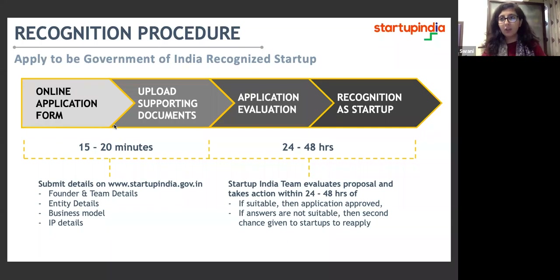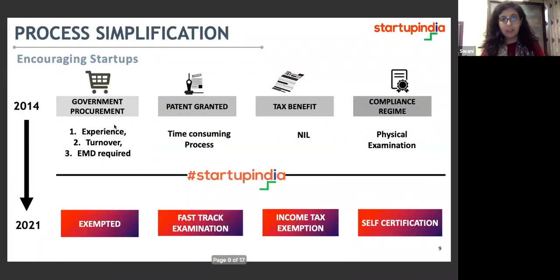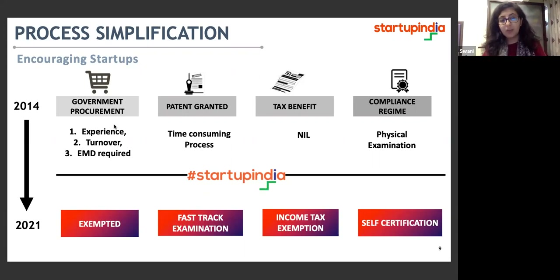The application requires information about the product, and the startup may attach a pitch deck and the certificate of incorporation. It takes approximately 24 to 48 hours to get the recognition. We ourselves do the recognition so that's how we maintain such a tight timeline — it generally does not exceed more than 48 hours. Moving on to the second pillar: support and incentives. Any recognized startup is exempted from prior experience, turnover, and EMD requirements for government procurement tenders. There is also fast-tracked patenting, income tax exemption, and self-certification of certain compliances.